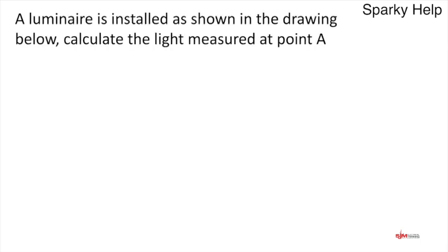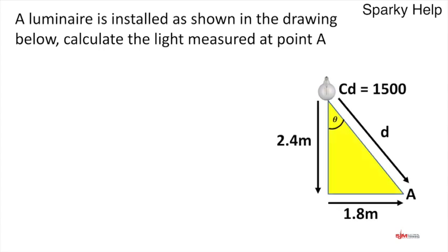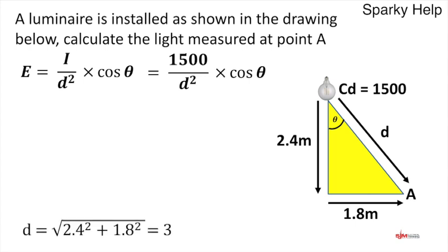A luminaire is installed, calculate it on the diagonal at this point. The light is 1500 candelas, 2.4 meters up but 1.8 meters away. We don't know D or the angle. We start with our formula, put in the 1500. Good old trigonometry now, Pythagoras kicks in. To find the distance, those two sides squared, added together, then square root. 2.4 squared plus 1.8 squared, square root gives us 3 meters. That's D sorted.